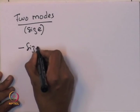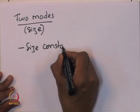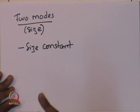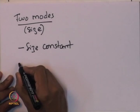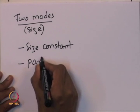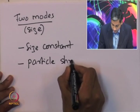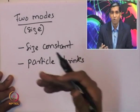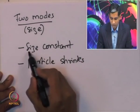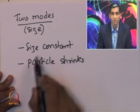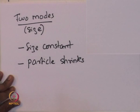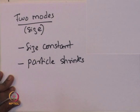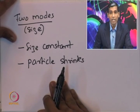One mode is where the size of the solid core remains constant; another is where the size actually shrinks — that is, the particle changes in size. It should be noted that if the densities of solid reactant and product are different, the particle can also expand.